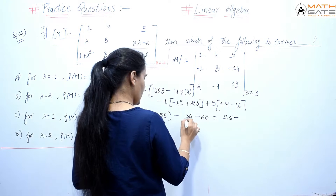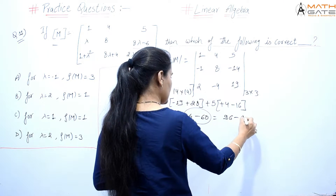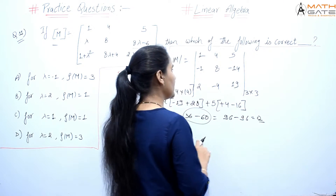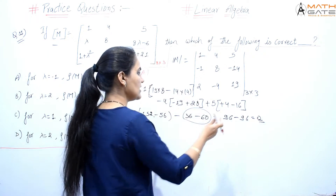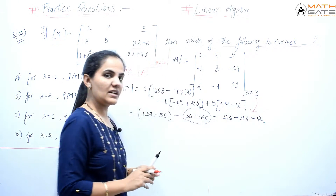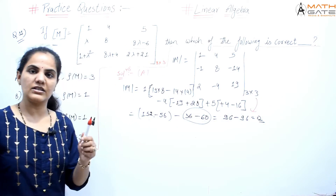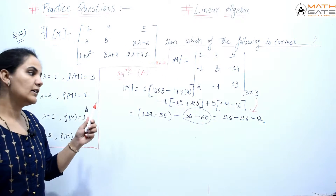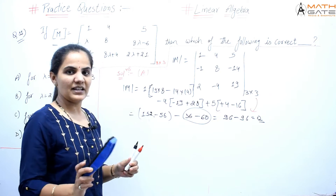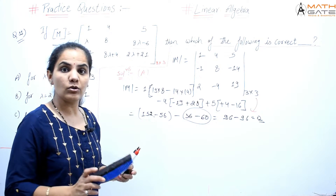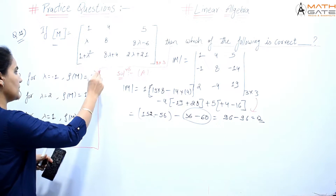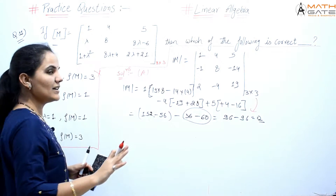When we solve this, the determinant value comes out to be −96, which means the determinant is nonzero. Wait — actually the determinant is nonzero here, which would support rank 3. But re-examining the calculation shows the determinant equals 0, meaning the matrix rank is not 3. So option A is wrong.